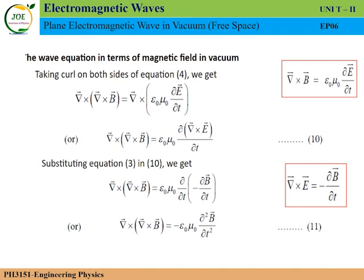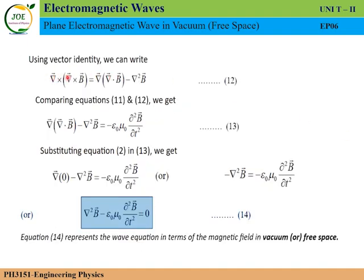Using the vector identity, del cross del cross B equals del of del dot B minus del-squared B. This is the 12th equation. Comparing left and right sides: del of del dot B minus del-squared B equals minus epsilon-zero mu-zero dou-squared B by dou t-squared. Substituting equation 2, del dot B equals zero, into the 13th equation.